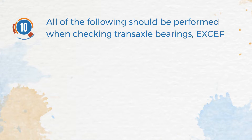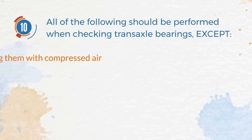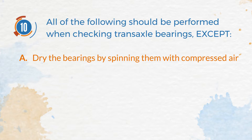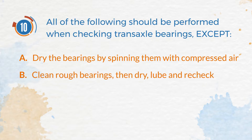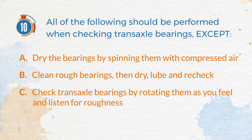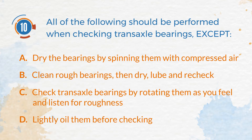Number 10. All of the following should be performed when checking transaxle bearings, except. A. Dry the bearings by spinning them with compressed air. B. Clean rough bearings, then dry, lube and recheck. C. Check transaxle bearings by rotating them as you feel and listen for roughness. D. Lightly oil them before checking.